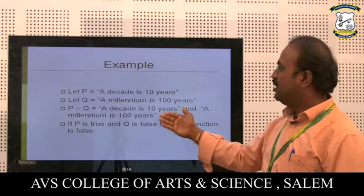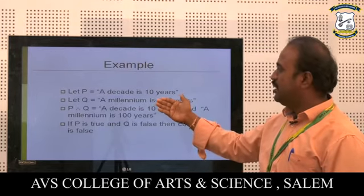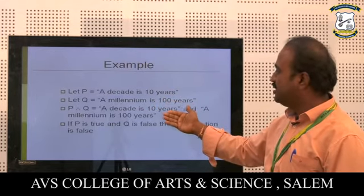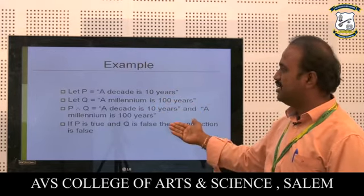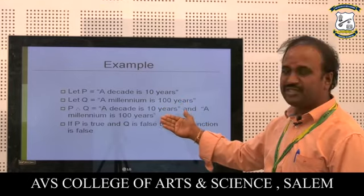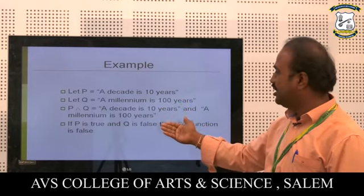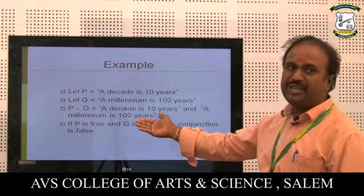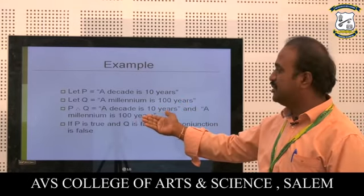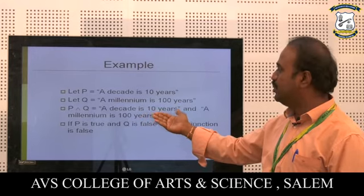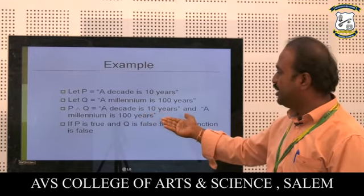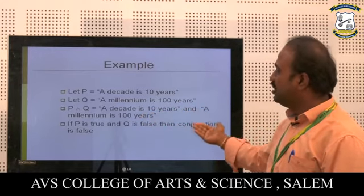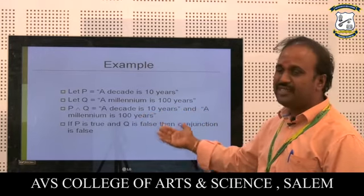Example for conjunction: Let P equal to 'A decade is 10 years' and Q equal to 'A millennium is 100 years.' The conjunction statement P and Q is: 'A decade is 10 years and a millennium is 100 years.'